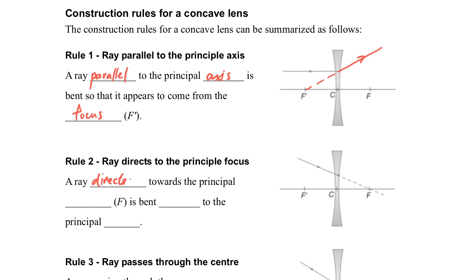And then rule number two, when the ray is directed towards the focus on the other side of the lens, the light will then go parallel to the axis. So you can see the figure, you can see how the light travels.